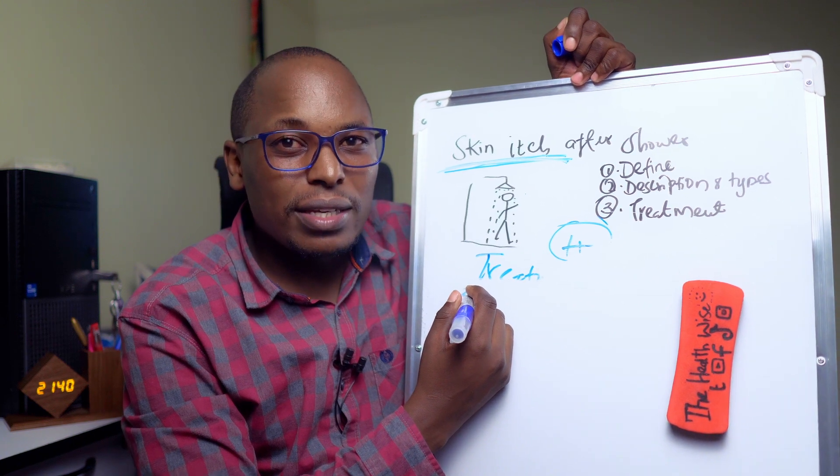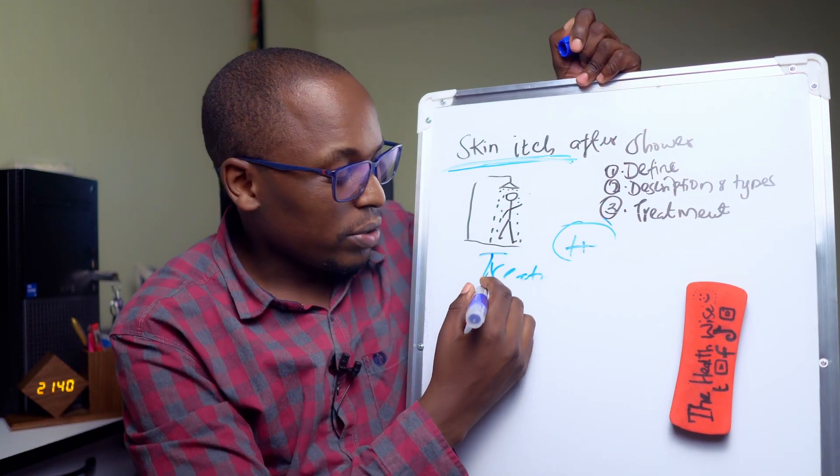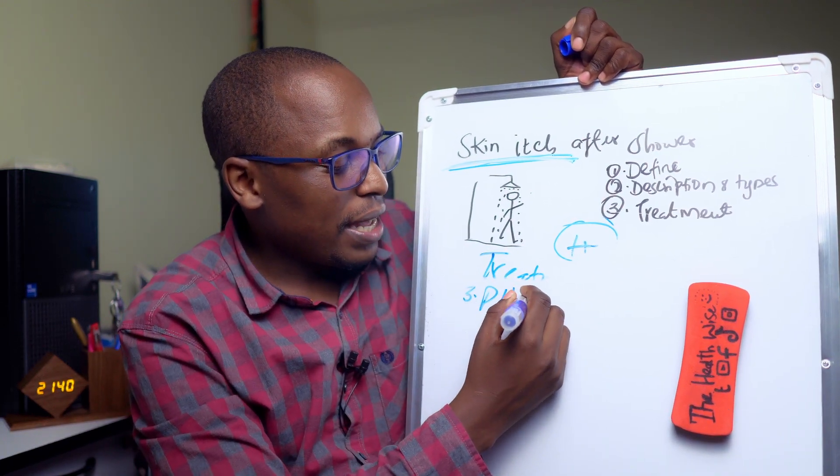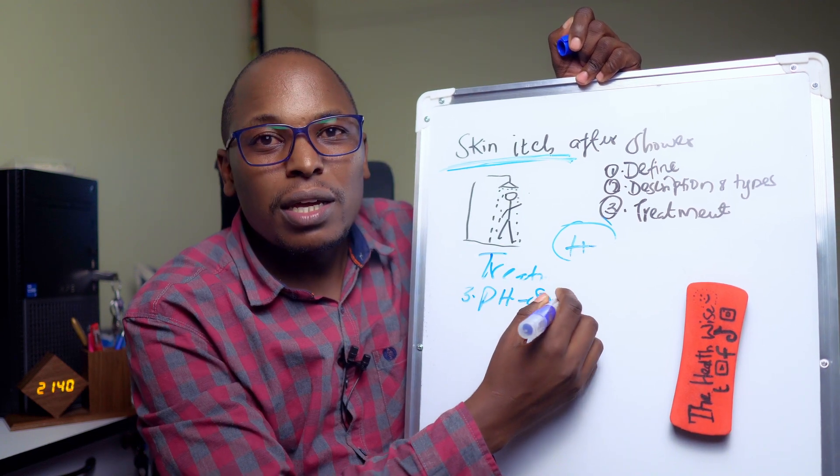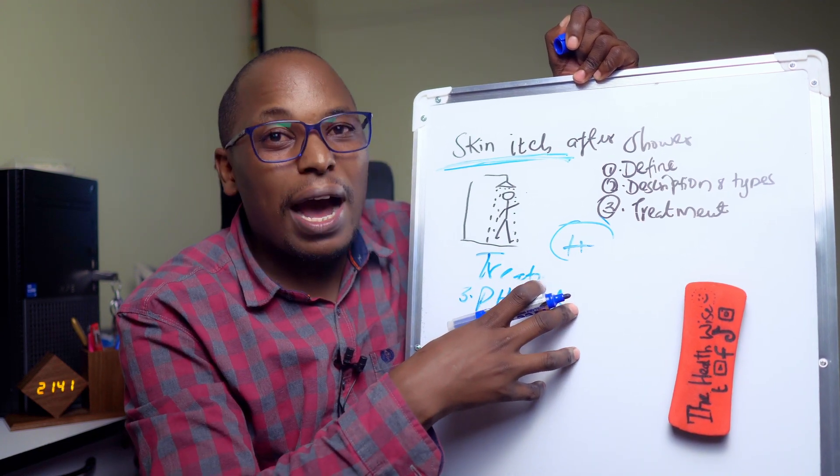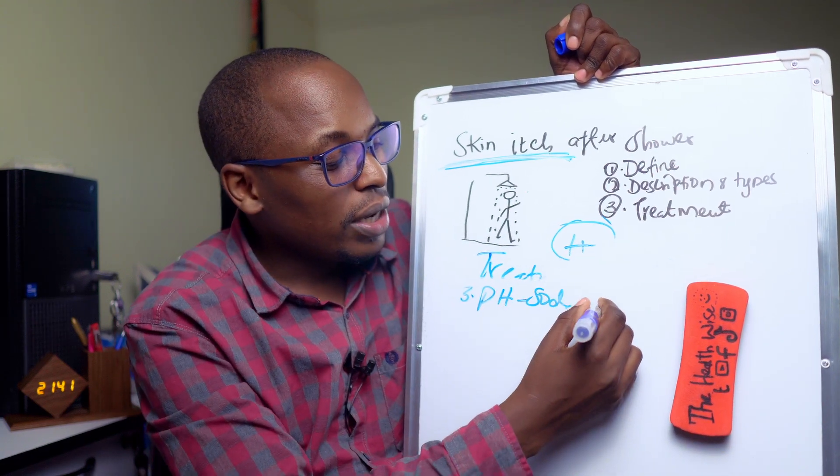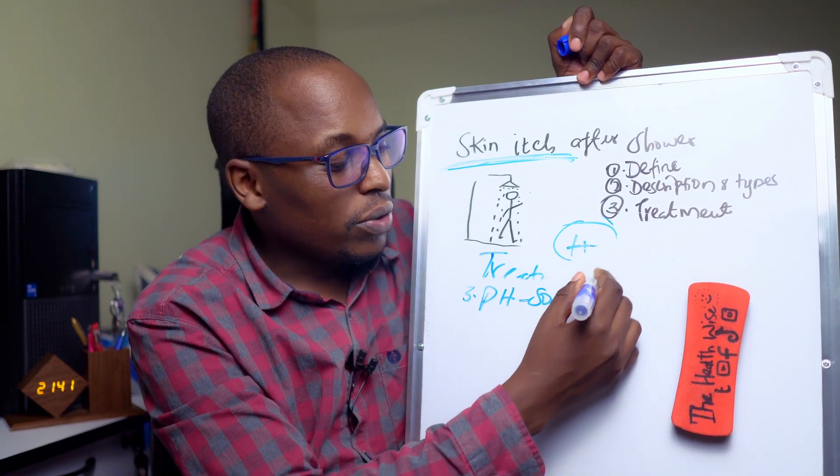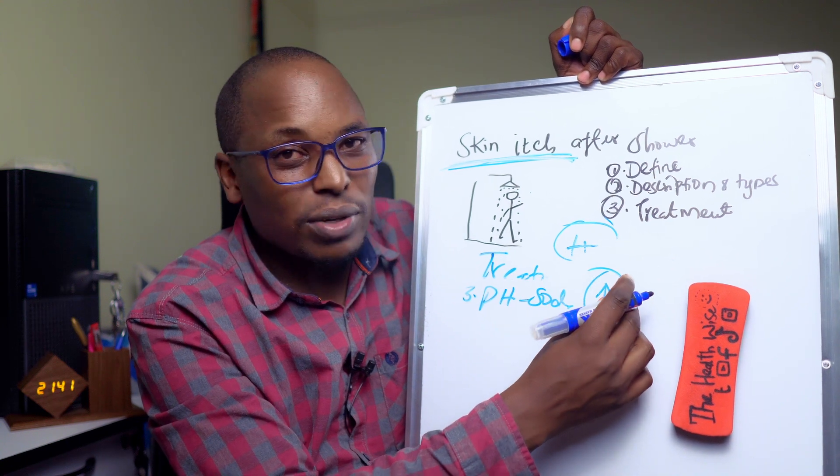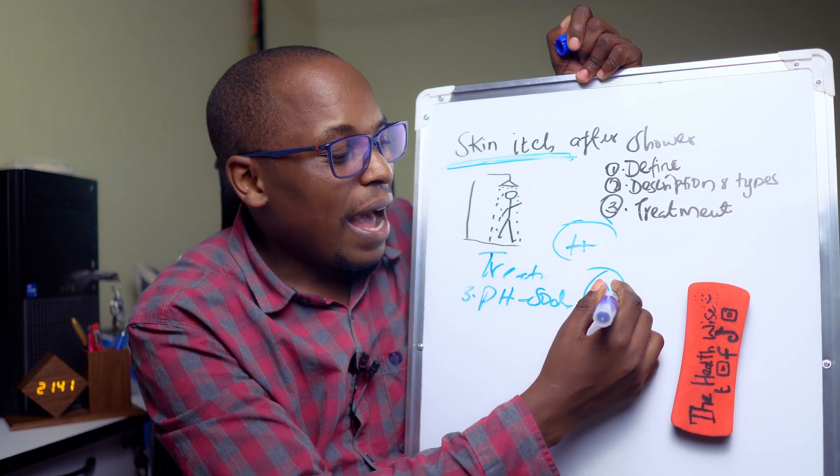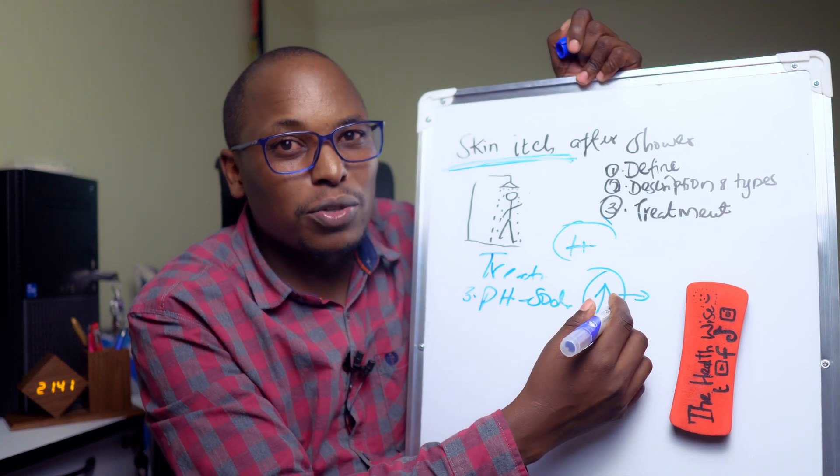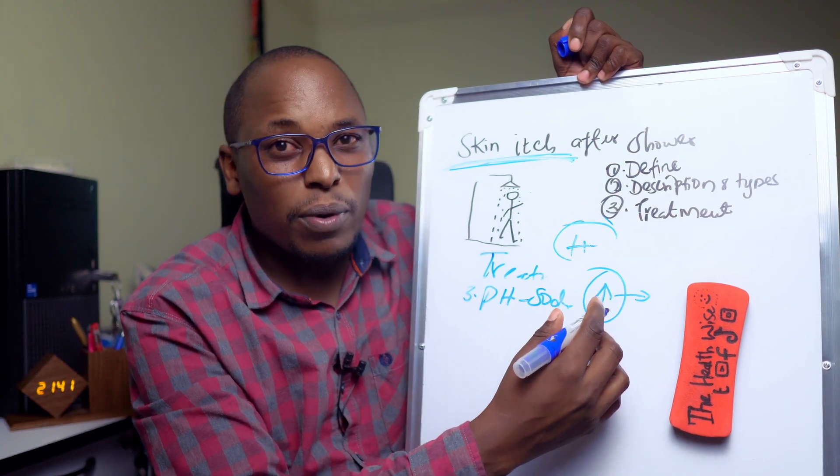Something else I've seen working is trying to increase the pH of the water you're using. You do this by adding baking soda. When you add baking soda to the water you're going to take a shower with, you increase the pH, making sure the water you're using is not acidic. This has proven beneficial to most people.